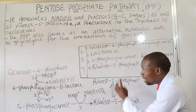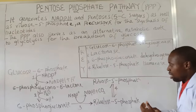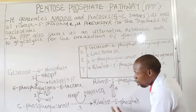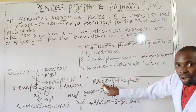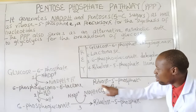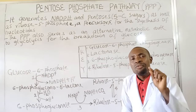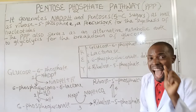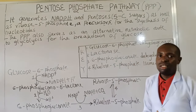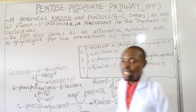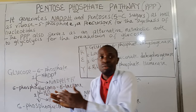The last step of this irreversible phase is that there will be an epimerization or isomerization of this ribulose-5-phosphate by ribulose-5-phosphate isomerase, and that is what ends the oxidative phase.